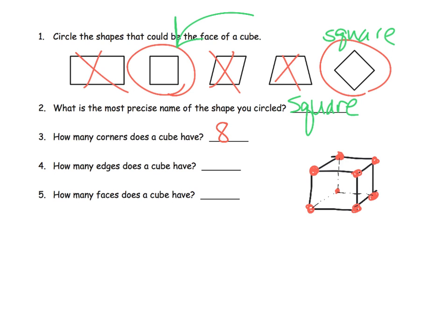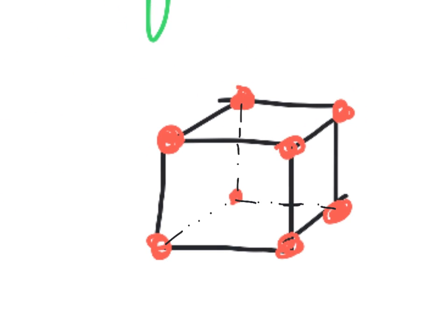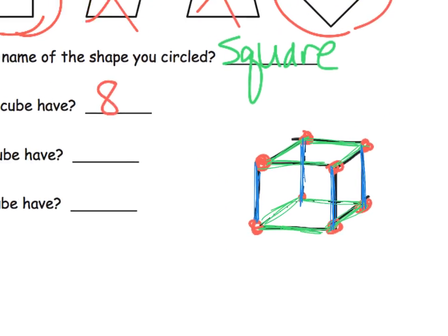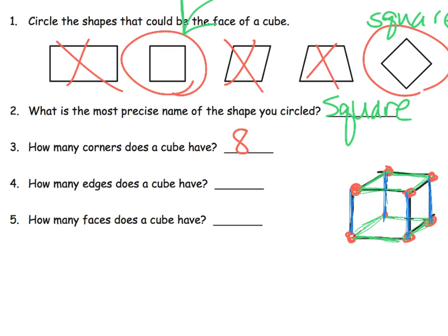How many edges? We can look at this figure and see the edges around the top — there's four of them: one, two, three, four. And if there's four on the top, we know there's four on the bottom — one, two, and then the two in the back that we can't see, three, four. That's eight because four plus four is eight. Then we have the four going up and down — one here, one here, one here, and then the fourth one in the back. So it's essentially four plus four plus four, which is 12. We know that the cube has 12 edges.